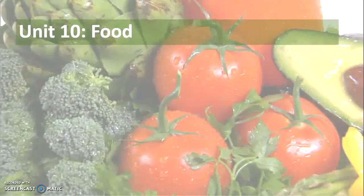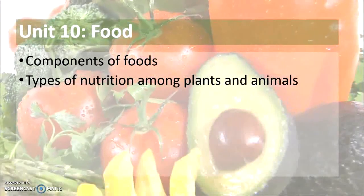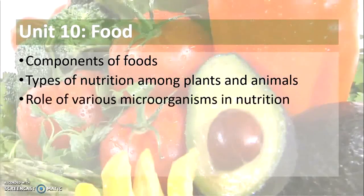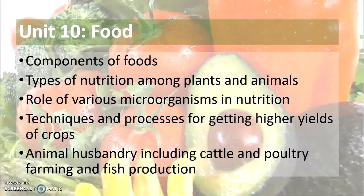From unit ten, we shift our focus to content-based methodology. Unit ten talks about different components of food, types of nutrition among plants and animals, the role of various microorganisms in nutrition, techniques and processes for getting higher crop yields, and animal husbandry including cattle and poultry farming. The focus is not on content as such, but on how you will deal with this content in your classroom.